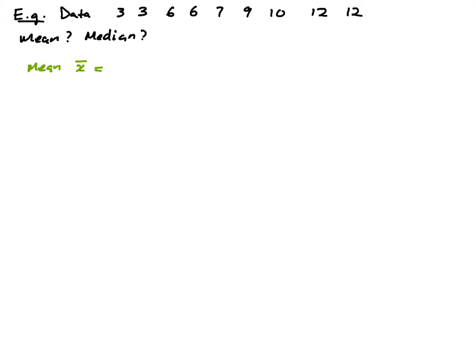Let's calculate the mean. To find the mean, you add up all the numbers and divide by the number of items. So: 3 + 3 + 6 + 6 + 7 + 9 + 10 + 12 + 12, divided by 9 total observations. That gives you a mean of 7.56.